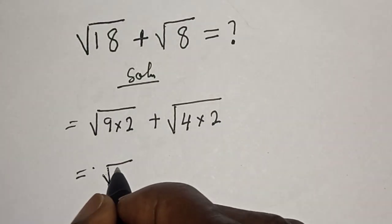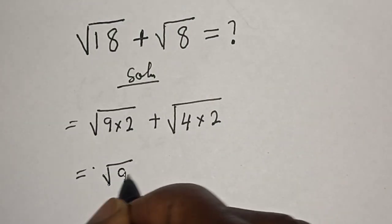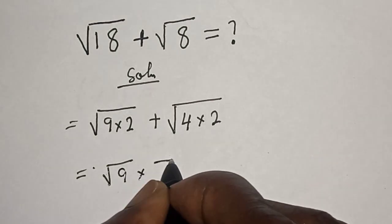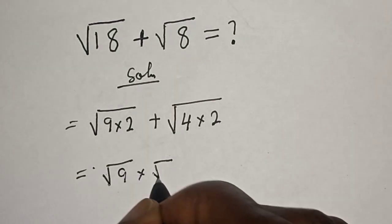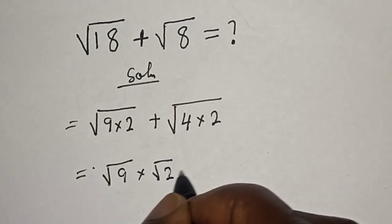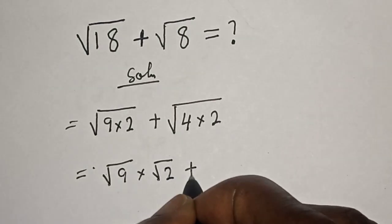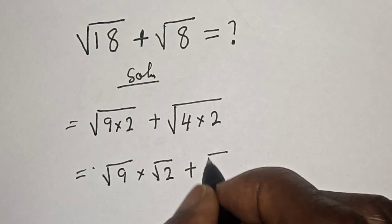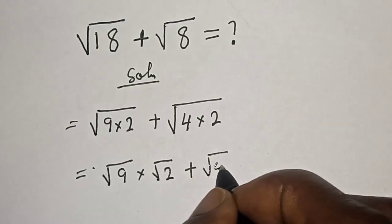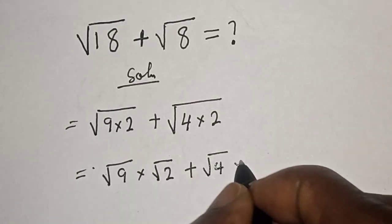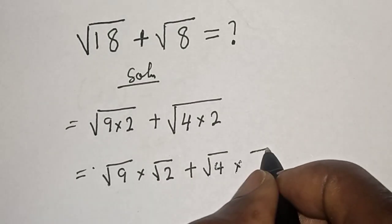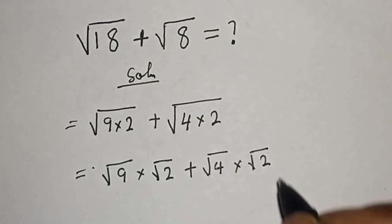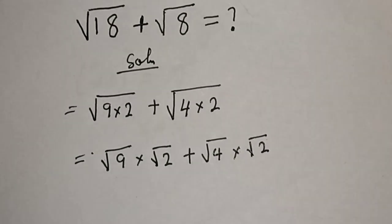Then square root of 9 multiplied by square root of 2, plus square root of 4 multiplied by square root of 2.